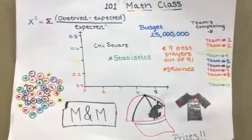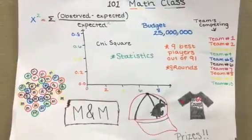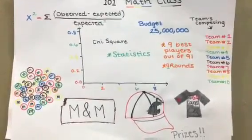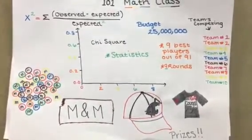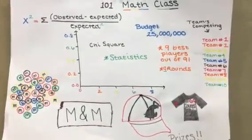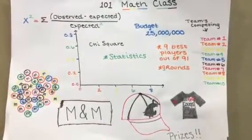This was our first math class. We learned how to figure out statistics for the chi-square using a formula, and we took out the amounts of M&Ms found in every bag.